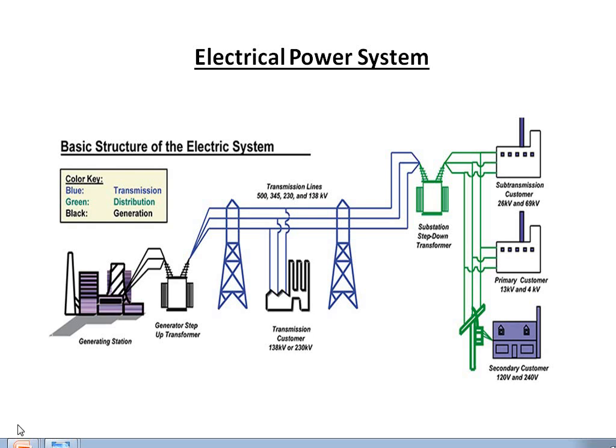In this video I am going to explain about the electrical power system. The electrical power system basically consists of three main components: generation, transmission, and distribution. At the generation side, electrical energy is generated with the help of different generating stations like hydroelectric power stations, thermal power stations, nuclear power stations, etc. Then the electricity is transmitted to long transmission lines and distributed at the consumer side.